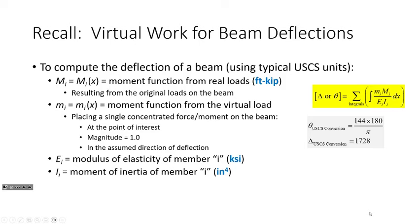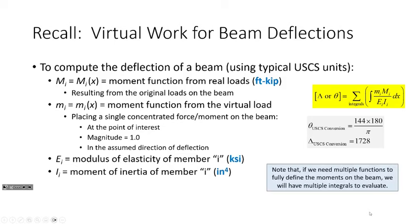When you look at your units they're going to be off, so we have unit conversion factors for both deflections and rotations. For rotations the conversion factor is 144, and then 180 over pi to get the answer in degrees. For deflections it's 1728 — that's 12 cubed. What's going to get challenging with beams is situations where we have only one integral versus multiple integrals to evaluate, because we might have multiple moment functions.